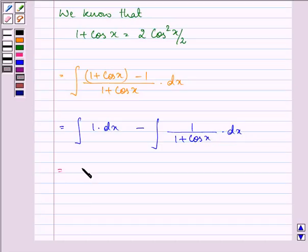That equals integral of 1 dx is x minus, here 1 plus cos x can be written as 2 cos square x by 2 dx.